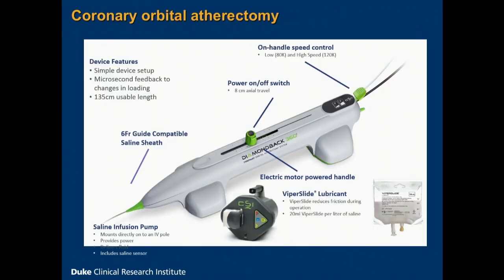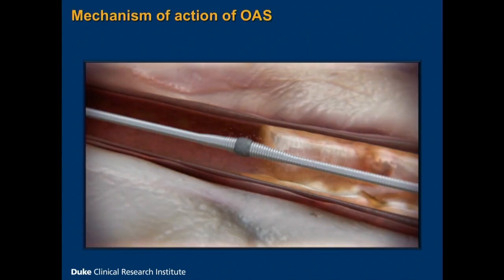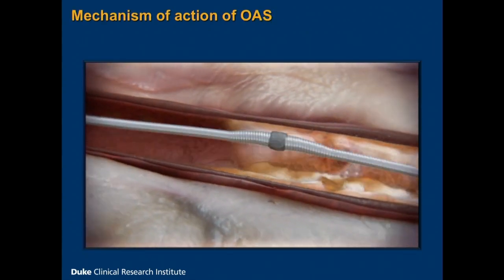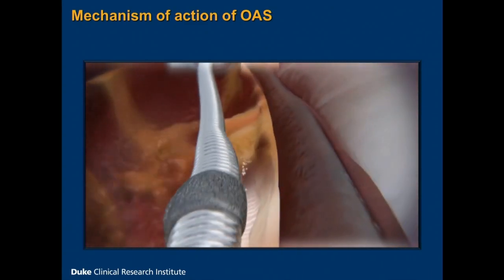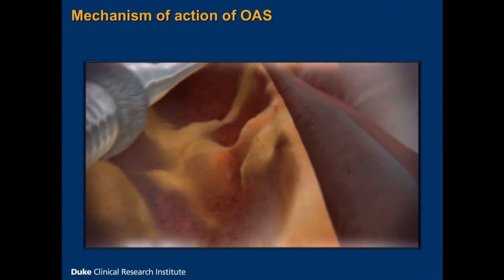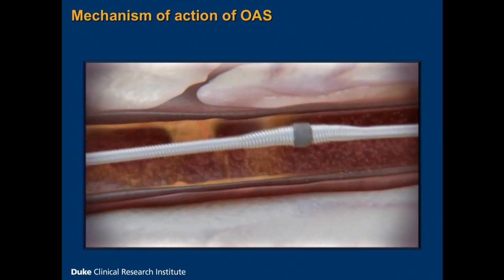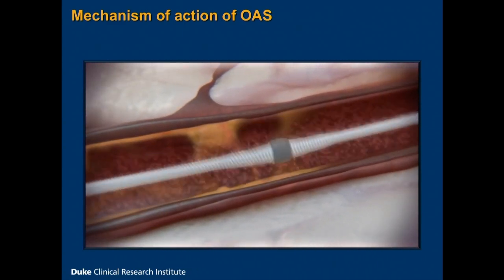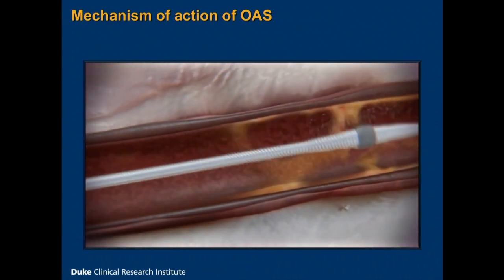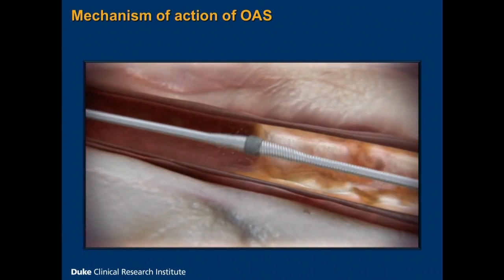This is the atherectomy device, as you all know. The device features a simple setup — it uses one console and one crown. The way you get more ablation is by increasing the RPMs and by increasing the number of passes; you don't replace the crown with a different size. It's a six-French compatible crown. It does use lubricant, and there's an on-off switch that uses an electric motor to power the device. The mechanism of action is very much like a double-dutch jump rope — a diamond-encrusted crown that will ablate both forward and backwards. Theoretically, just like rotational atherectomy, it will not harm tissue that is not calcified.